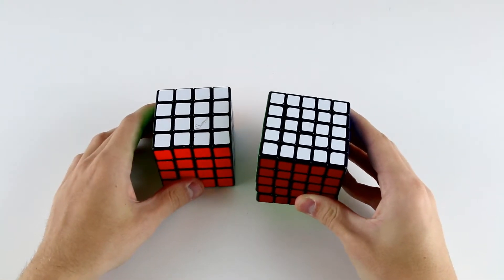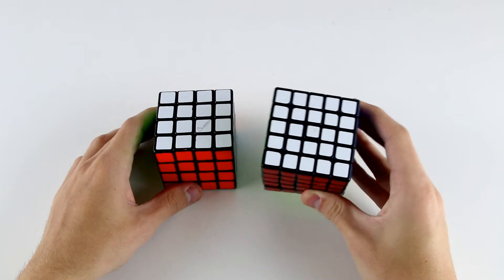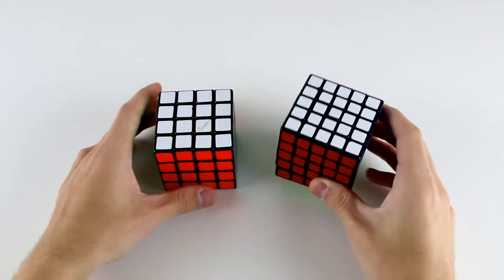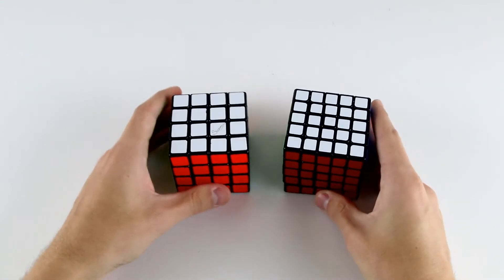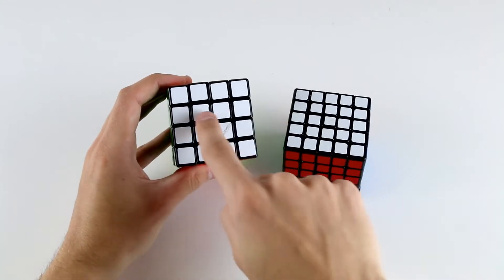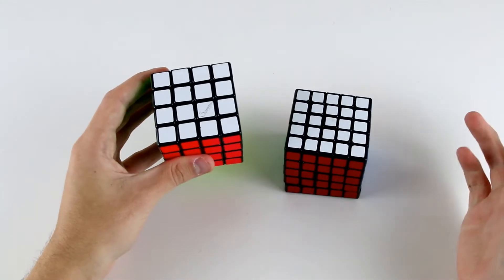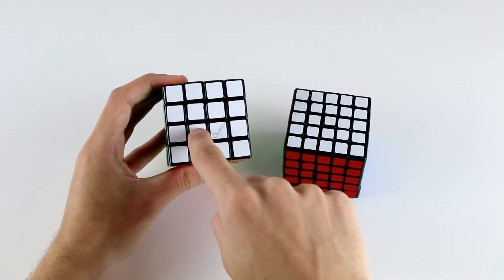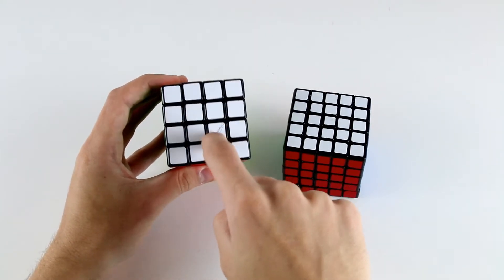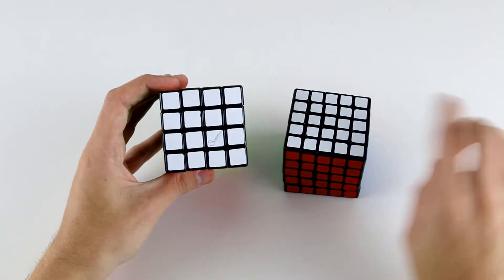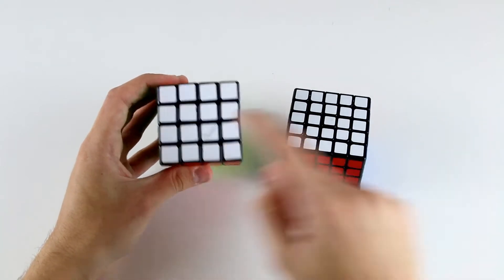Because a 5x5 cube has one additional layer, there are more and different types of pieces on this cube compared to the 4x4 and the 3x3. On the 4x4 cube, all the center pieces can be treated as exactly the same type of piece. That is to say, this one can be swapped with this one, this one can be swapped with this one, and so on.